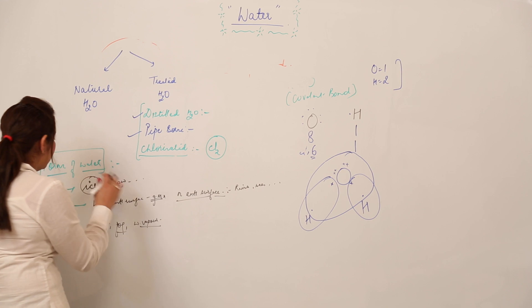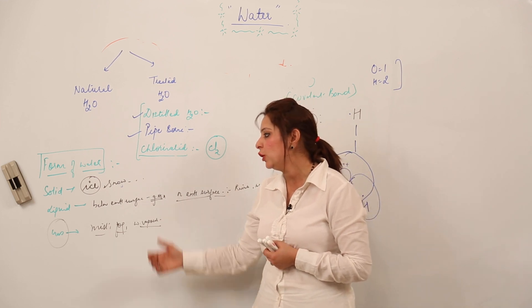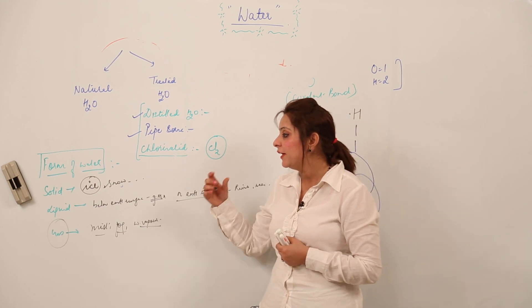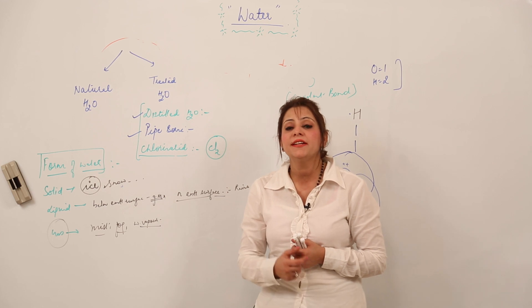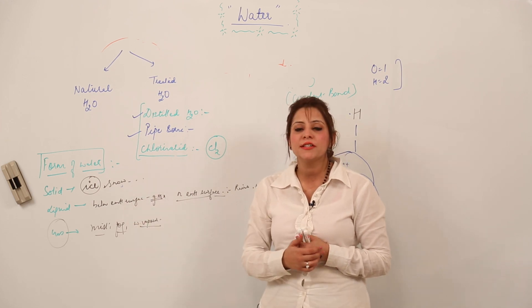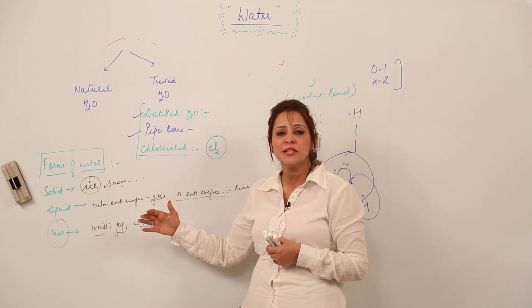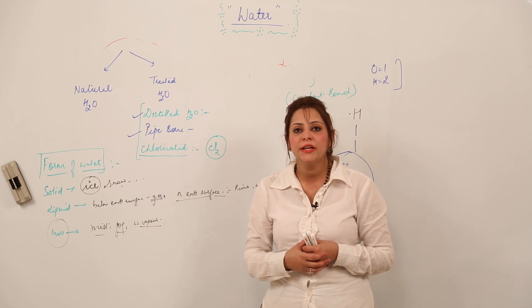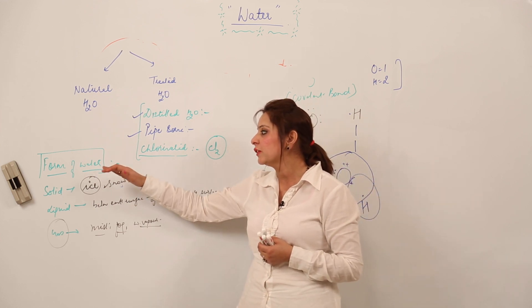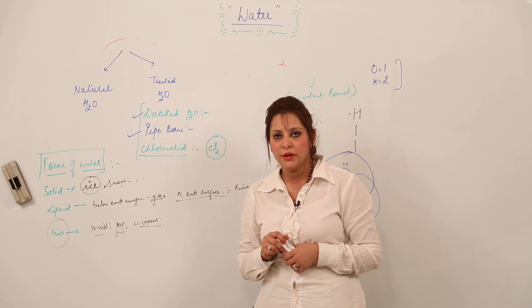So water exists in three forms — solid, liquid, and gas. As we discussed when studying states of matter, there is a point where all three states can coexist simultaneously, called the triple point. The triple point is not obtained under normal conditions; we need to set temperature and pressure accordingly. Different substances have different triple points at different temperatures and pressures. The point where the three states of water coexist is called the triple point.